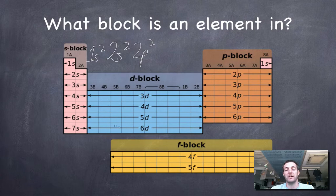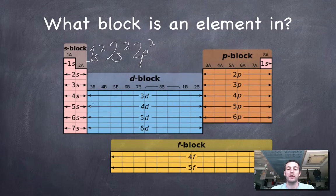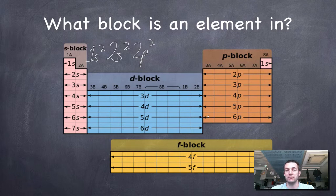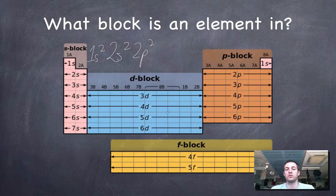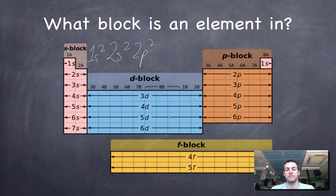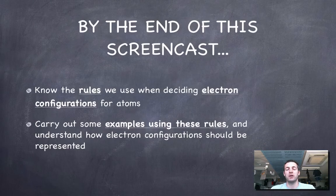If my highest occupied subshell is a d subshell, then I'd be a d-block element and I'd be found in the d block. Bear in mind, as I said earlier, all atoms have all these subshells available. What we're talking about is not what subshells do you have, but what subshell is your highest energy electron in when you're deciding what block an element is in.